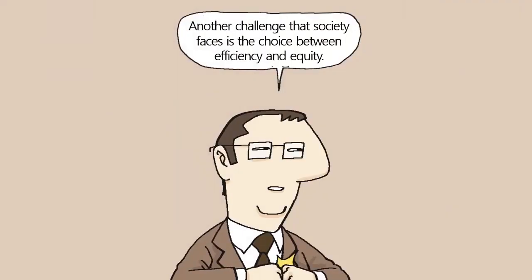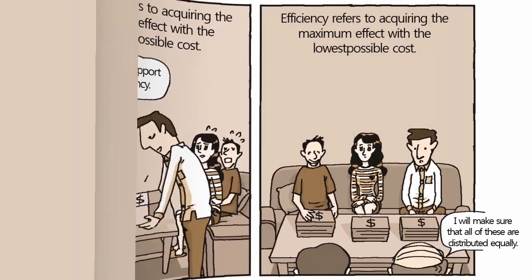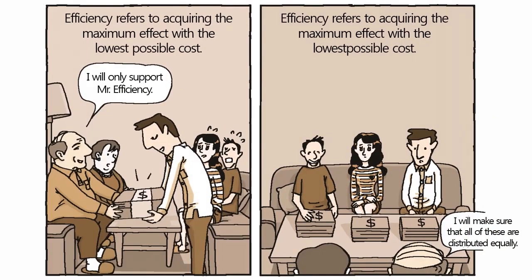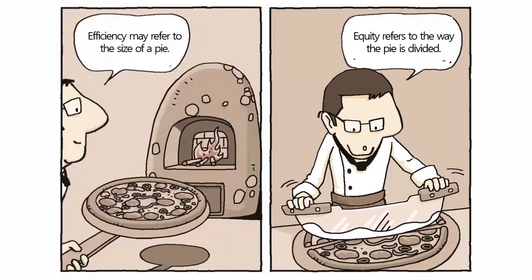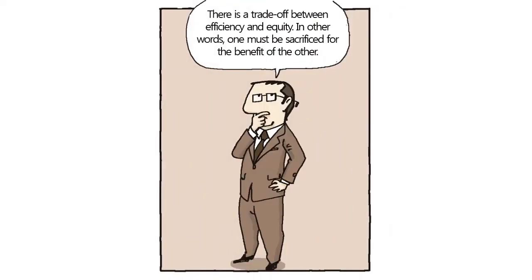Another challenge that society faces is the choice between efficiency and equity. Efficiency refers to acquiring the maximum effect with the lowest possible cost — it may refer to the size of a pie. Equity refers to the way the pie is divided. There is a trade-off between the two; one must be sacrificed for the benefit of the other.